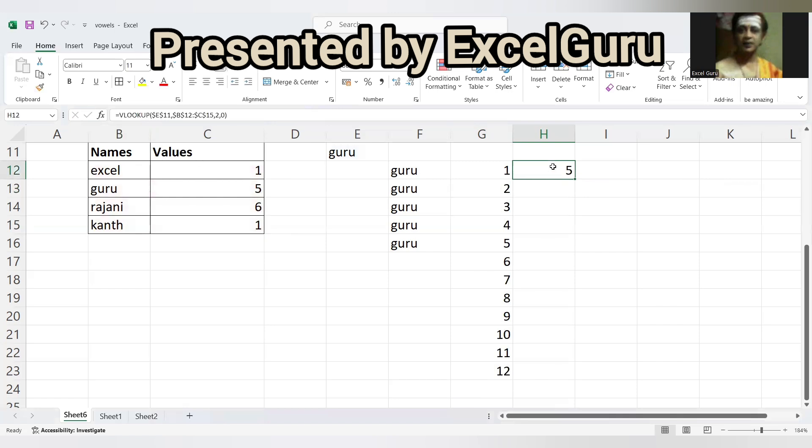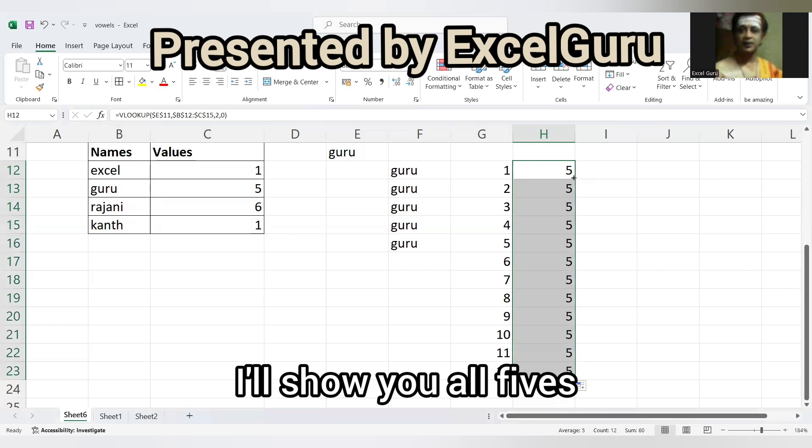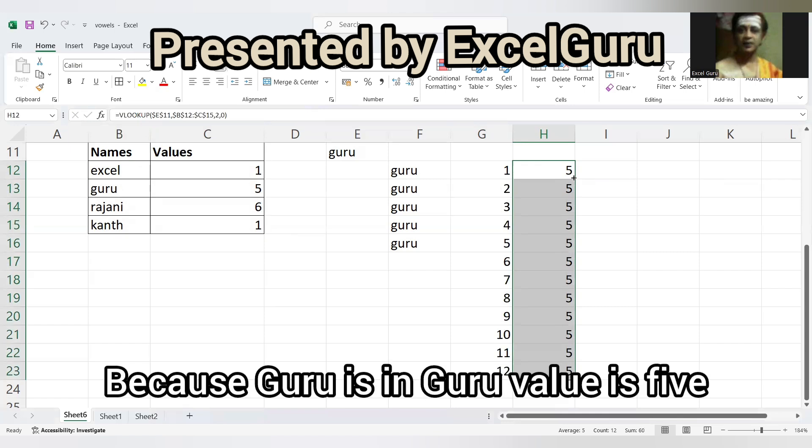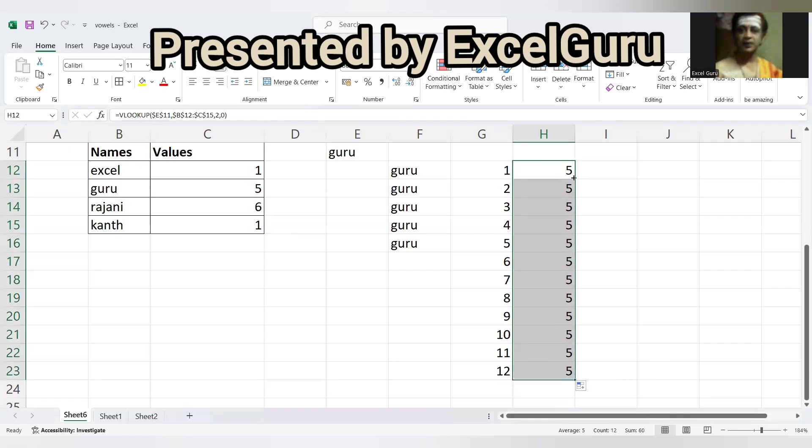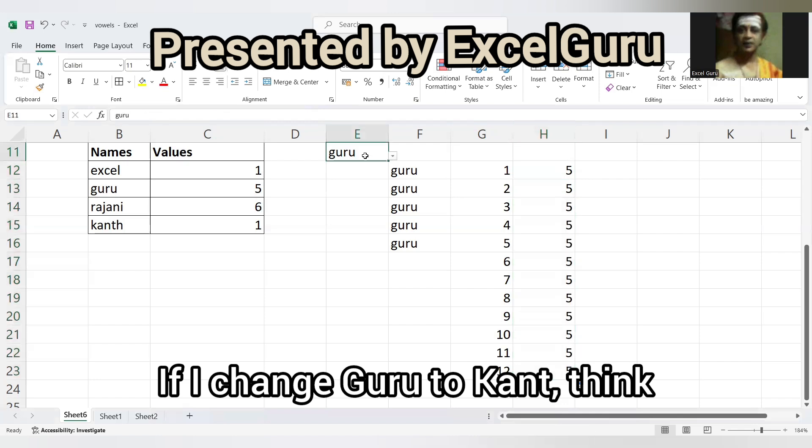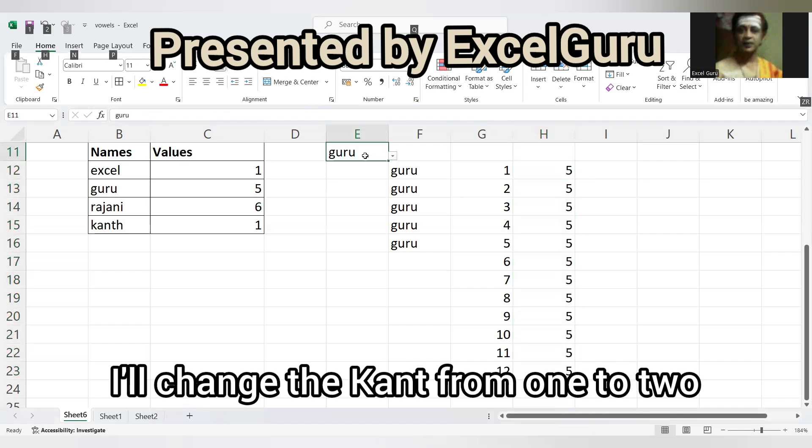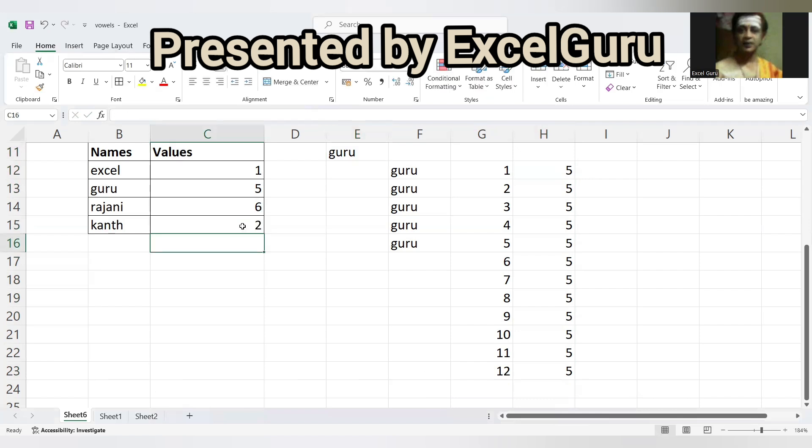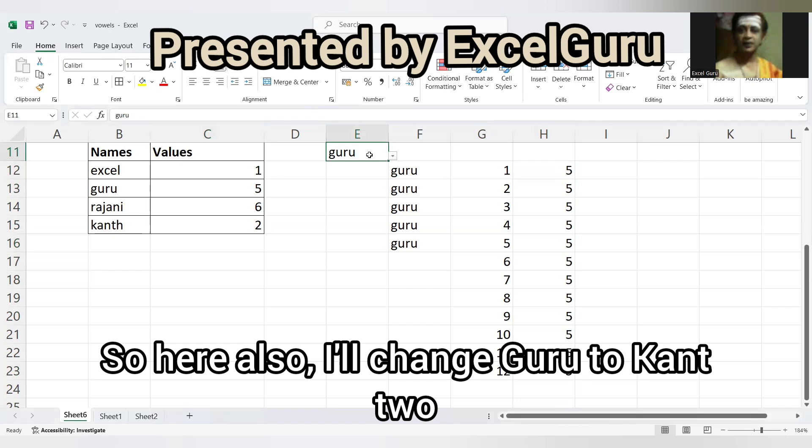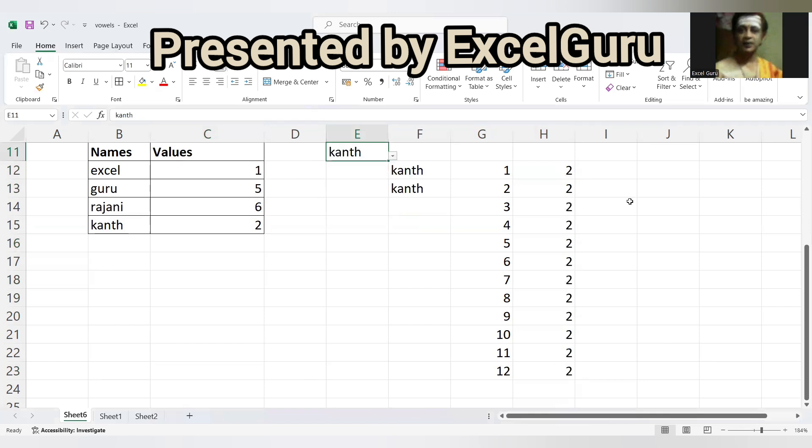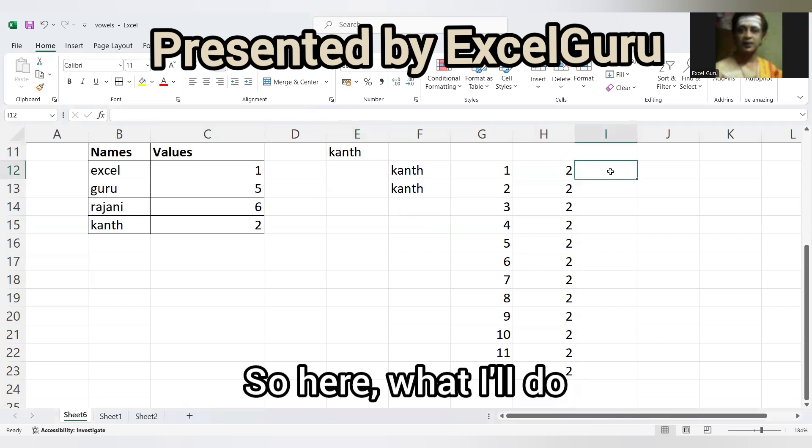Double click, so it's showing all five because Guru value is five. If I change Guru to Kant, I'll change the Kant from one to two. So here also I'll change Guru to Kant two.